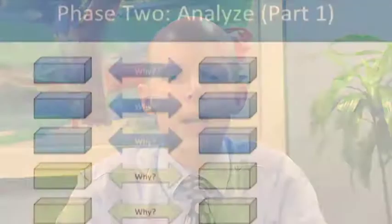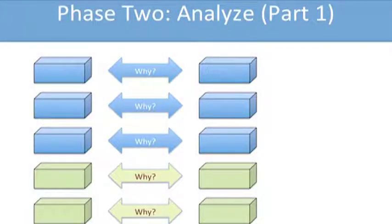Now in phase two we're going to ask the questions as to why do these gaps exist. What are the root causes that are keeping us from achieving the results that we really want to accomplish? This can be done in two parts. The first part is to ask the question: why is the gap? The second part is to start to analyze the relationship between the gaps. Is closing one gap really necessary for accomplishing another gap? Remember that in our definition of need, a need is the necessary relationship between these two gaps.